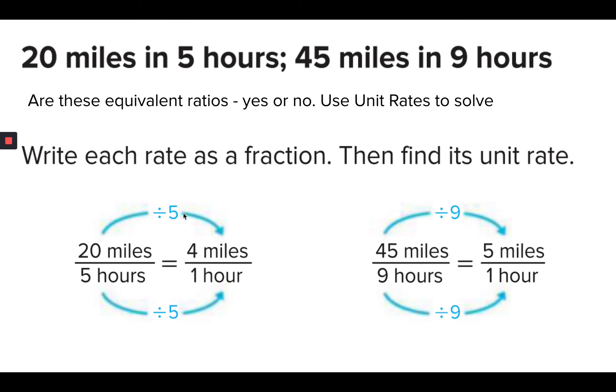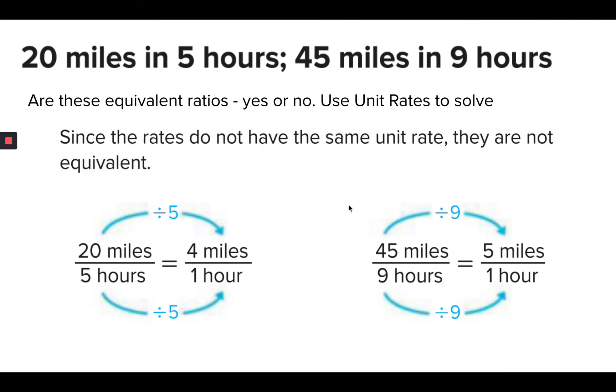20 over 5 as a unit rate would be 4 over 1. Here, we just divide it by 5. 45 over 9 reduces down to 5 over 1. So they are not equivalent. So the answer on that question in the book would just be no. They are not equivalent.